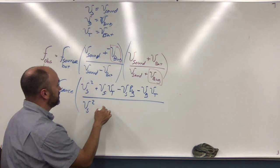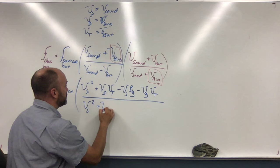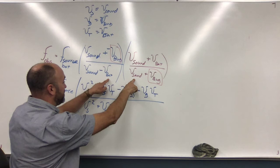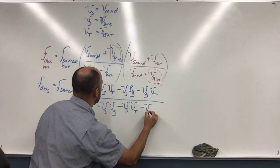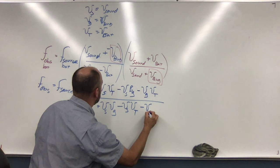And here we're going to have minus V bat times V bug. Does that make sense?